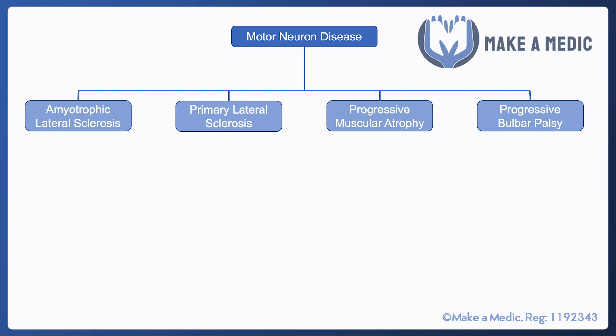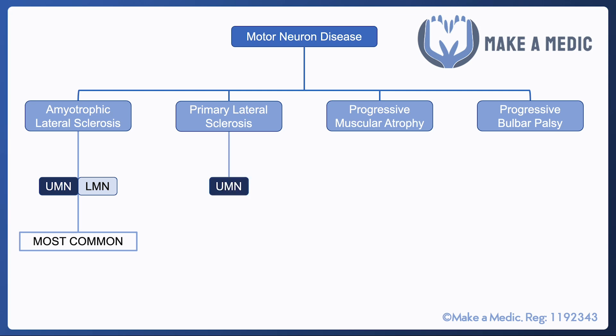Starting on the left hand side, amyotrophic lateral sclerosis or ALS is a condition that affects both upper and lower motor neurons, and it is actually the most common type of motor neuron disease. Primary lateral sclerosis is a form that just affects the upper motor neurons.